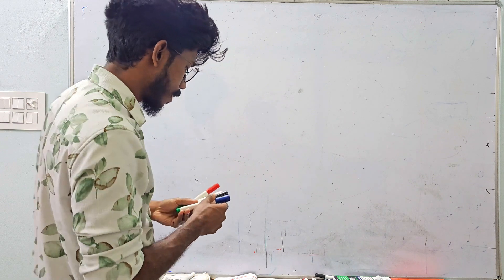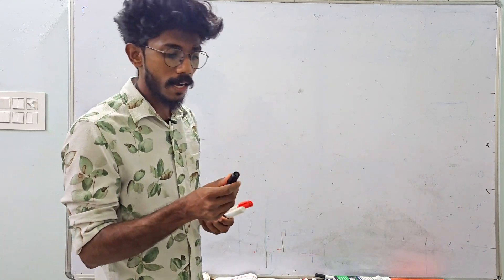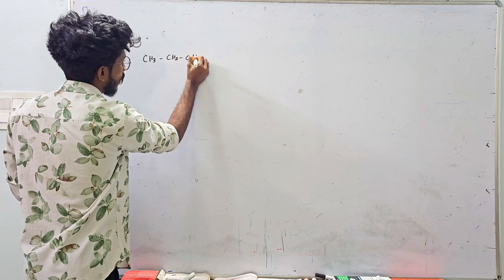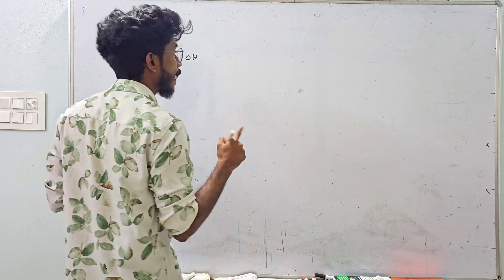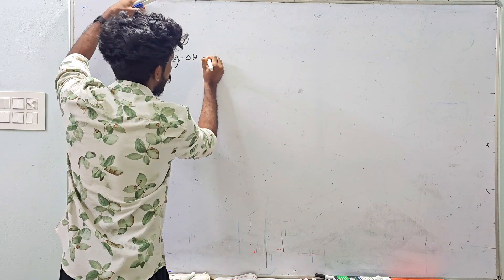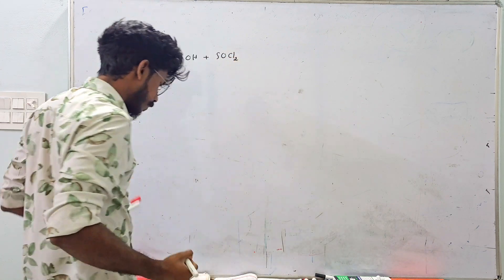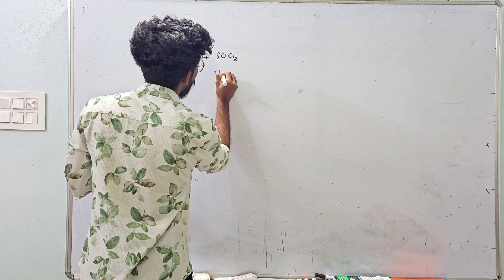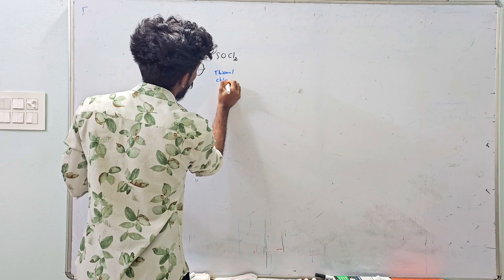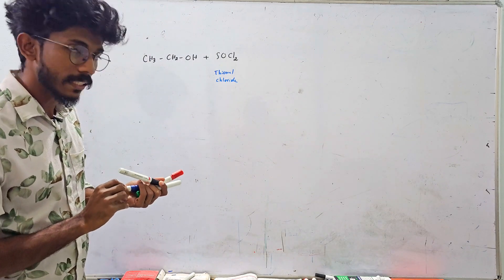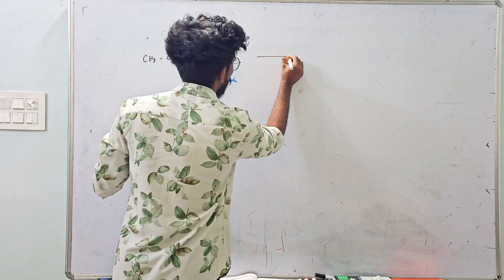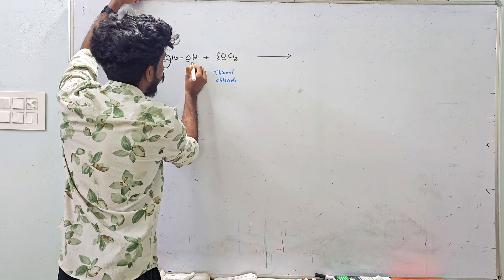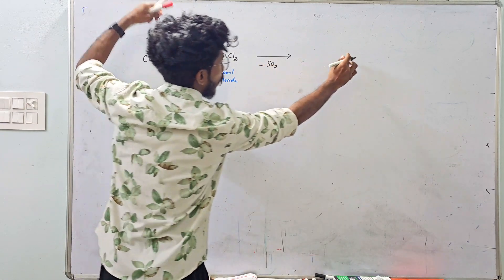Now, haloalkane preparation: we prepare haloalkanes from alcohol. For example, from ethanol (CH3CH2OH), we prepare haloalkanes. We will use thionyl chloride (SOCl2) for this reaction. Thionyl chloride is a very important reagent for haloalkane preparation.